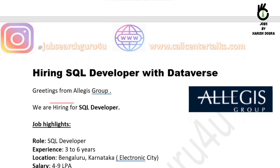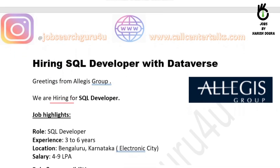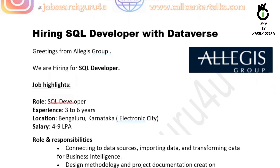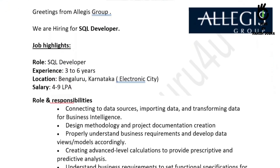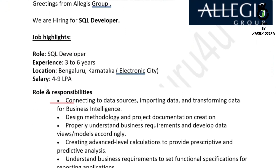Now let's look at the second job available — for SQL developer — with LHS Group. The role is for SQL developer, experience minimum 3 years and maximum 6 years, location is Bangalore, and the salary offered is 4 lakhs per annum to 9 lakhs per annum. That is a good range if you have 3 to 4 years of experience.